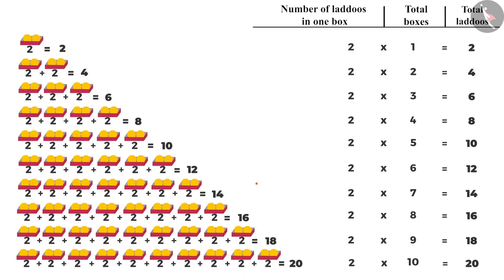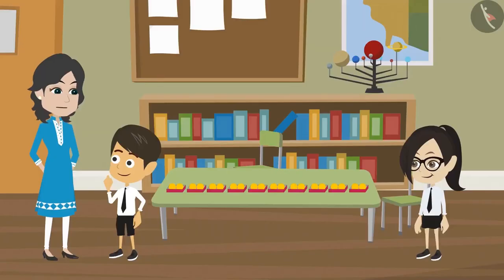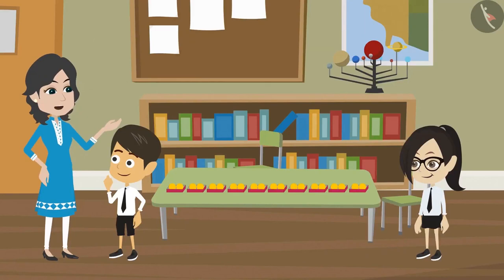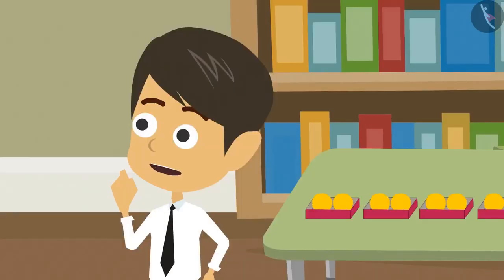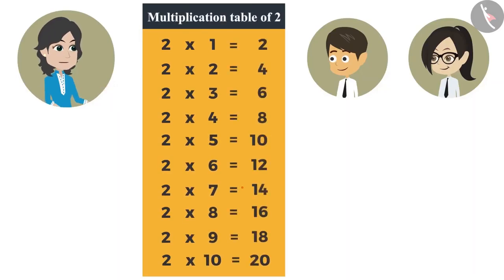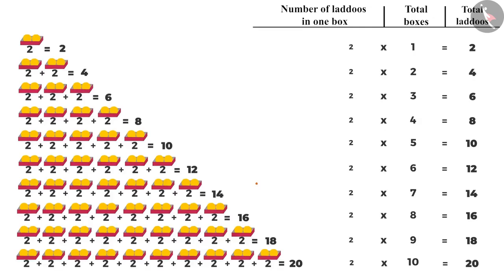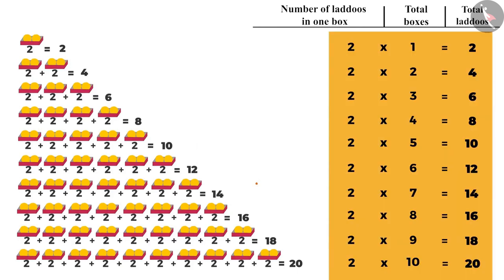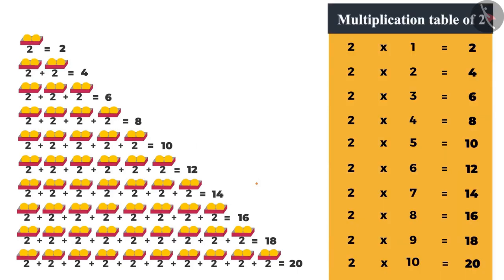It is easier to multiply two numbers than adding the same number again and again. Yes, that is why it is very important to memorize the tables. Otherwise, you have to use a pen and paper even for simple calculations. What are tables? The list obtained when you multiply a number by 1 to 10, it is called the multiplication table of that number. Just like you have multiplied 2 by 1 to 10 and obtained this list. This is the multiplication table of 2.